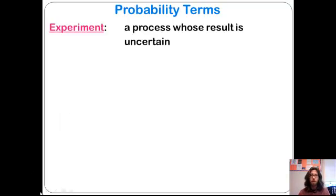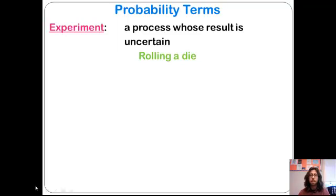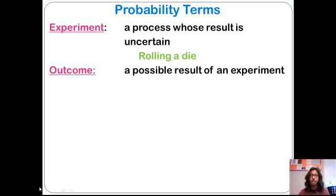Here are some quick terms. An experiment is simply a process whose result is uncertain. If you think of science or anything like that, you're going to go through something. What we tend to use a lot in probability is fairly simple games, like rolling a dice or flipping a coin.